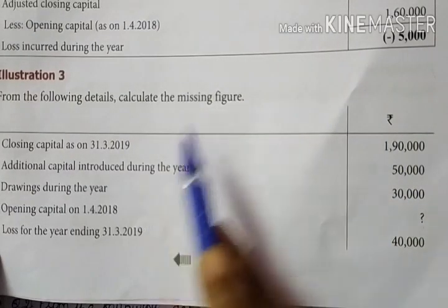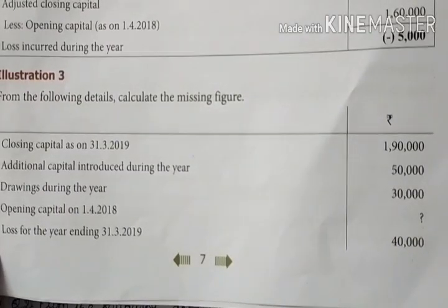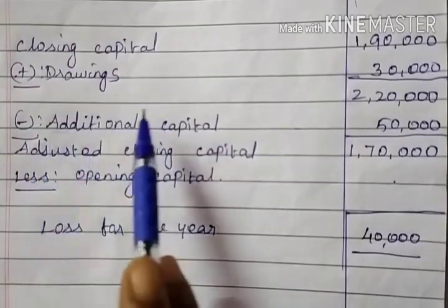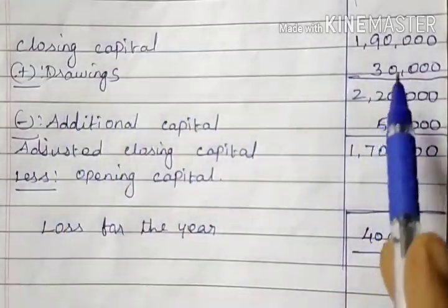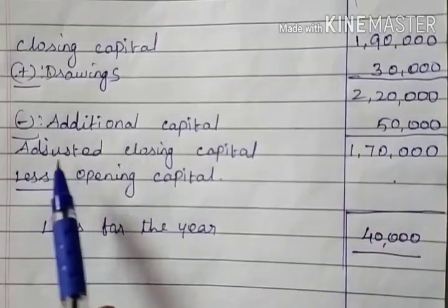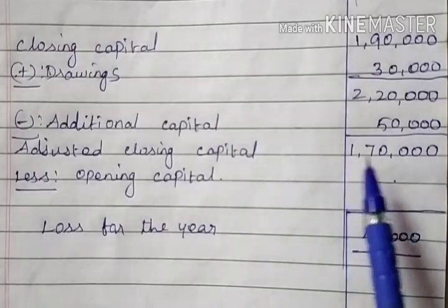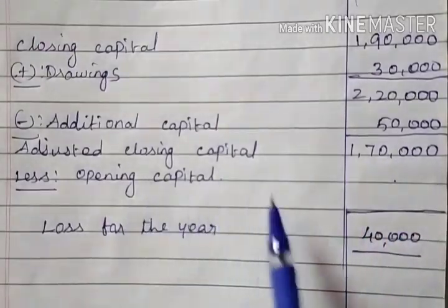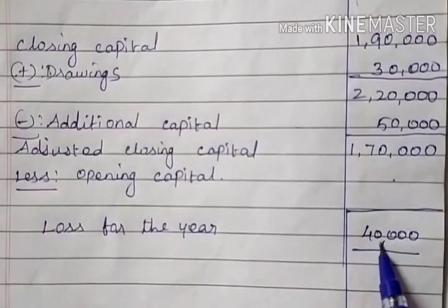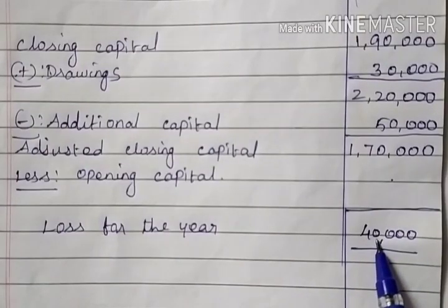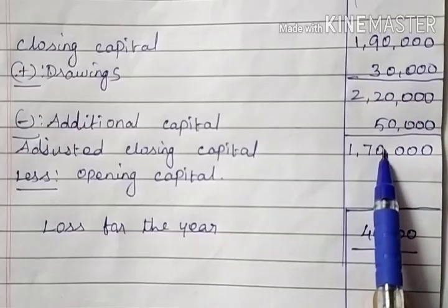Opening capital calculation: closing capital 1,09,000, add drawings 30,000 — total 2,20,000 (running total). Less additional capital 50,000 — adjusted closing capital is 1,07,000. Opening capital is a question mark. Loss for the year is 40,000. Adjusted closing capital is 1,07,000.